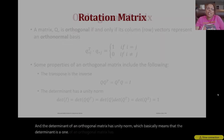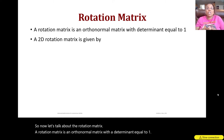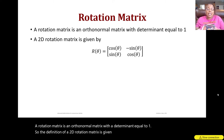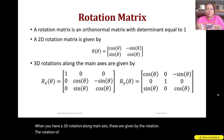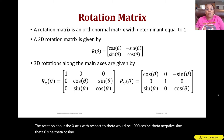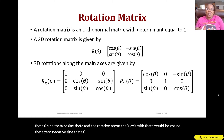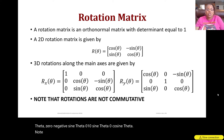A rotation matrix is an orthonormal matrix with determinant equal to one. The 2D rotation matrix for angle θ is [cos θ, −sin θ; sin θ, cos θ]. For 3D rotations about the main axes: rotation about the x-axis is [1, 0, 0; 0, cos θ, −sin θ; 0, sin θ, cos θ]; rotation about the y-axis is [cos θ, 0, −sin θ; 0, 1, 0; sin θ, 0, cos θ]. Note that rotations are not commutative, so you must perform them in order.